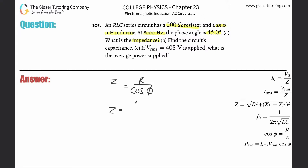We know the resistance is 200 ohms. The cosine of 45 — make sure your calculator is in degree mode, otherwise it's going to come out all types of funkiness. So 200 divided by cosine of 45 gives us an answer of about 283 ohms. That's the impedance.